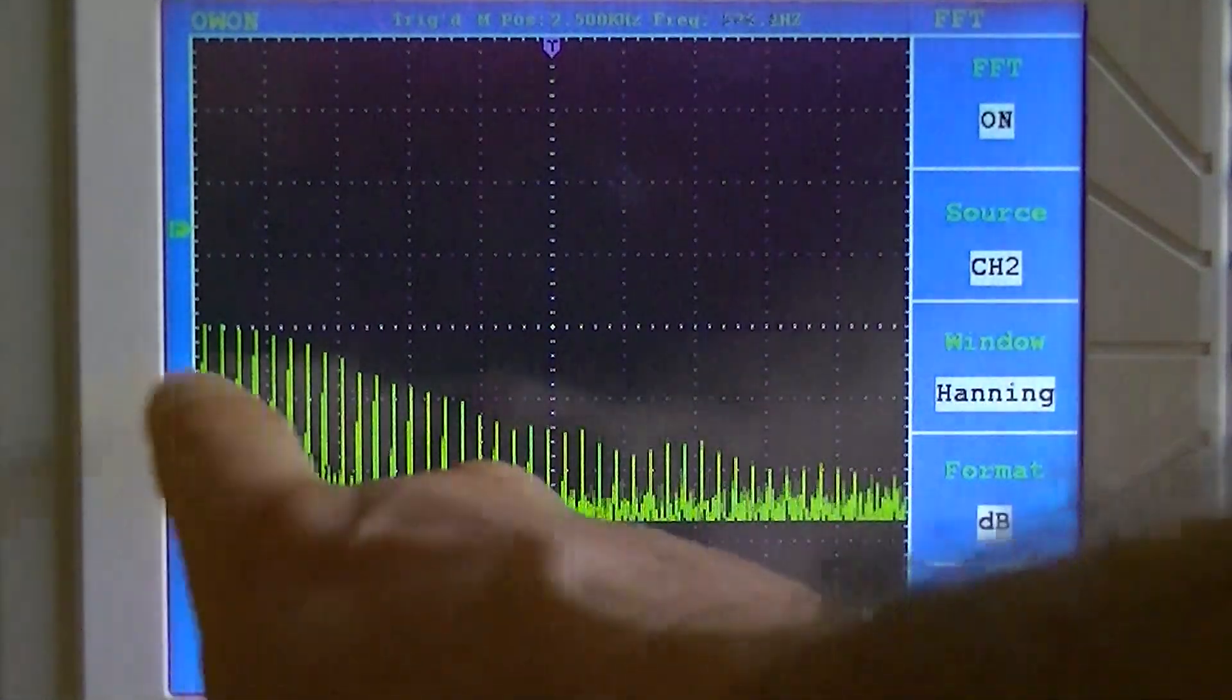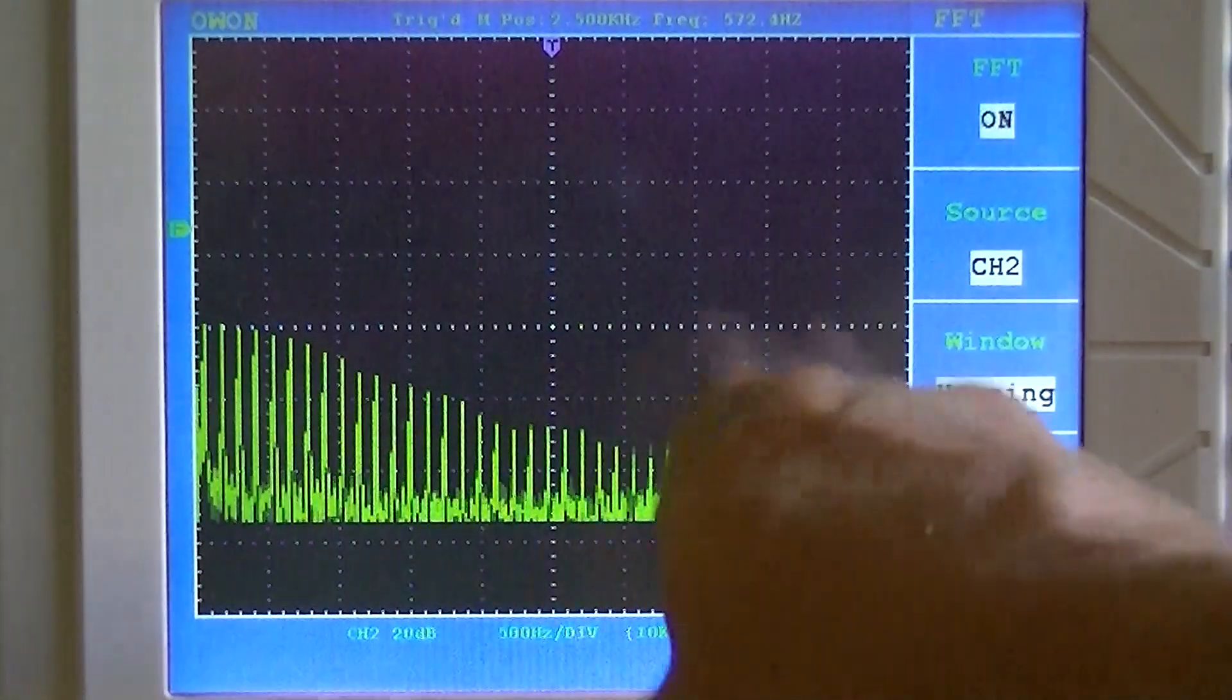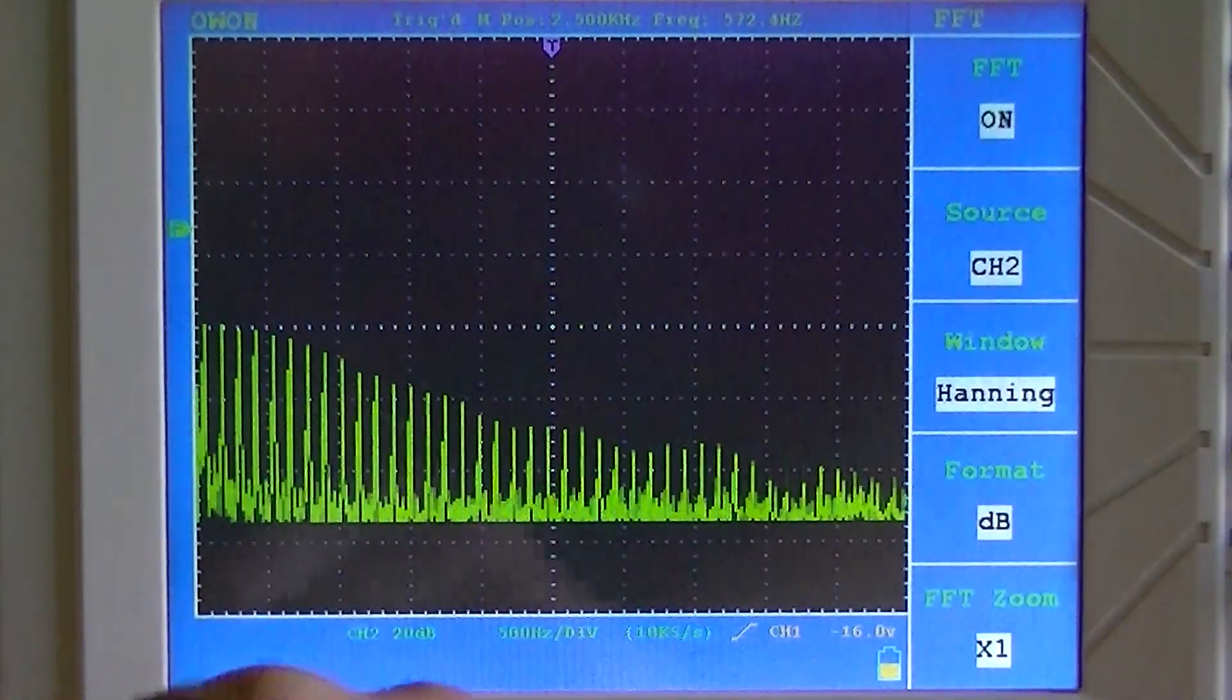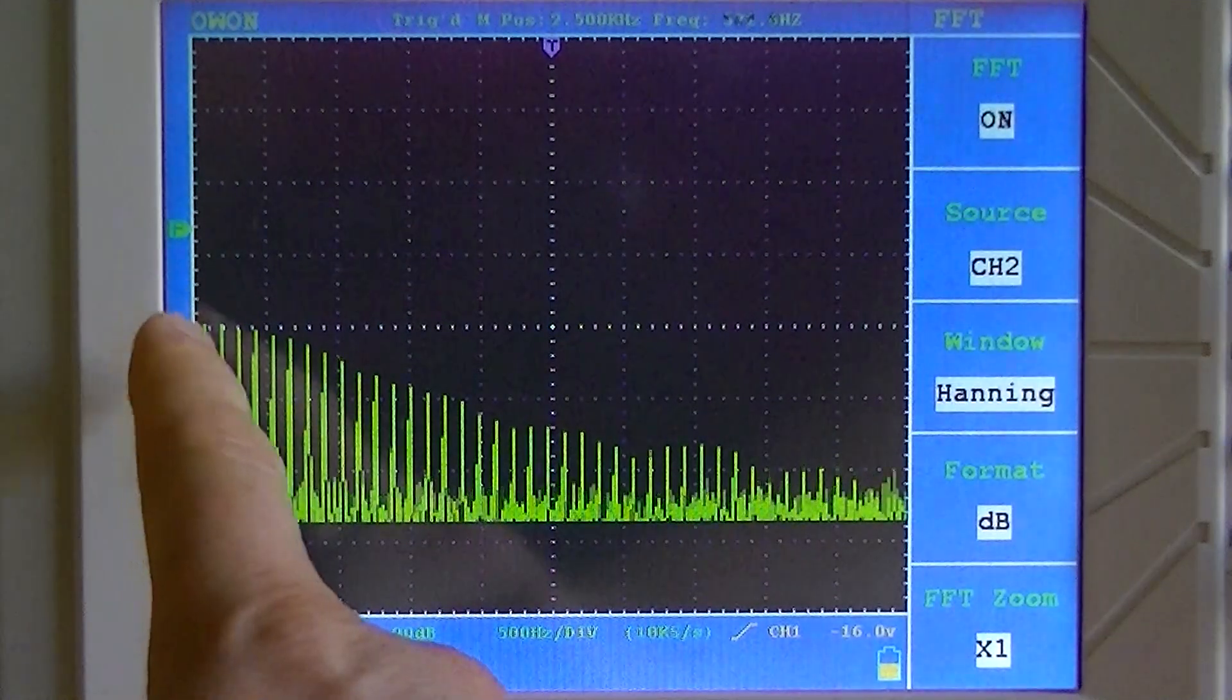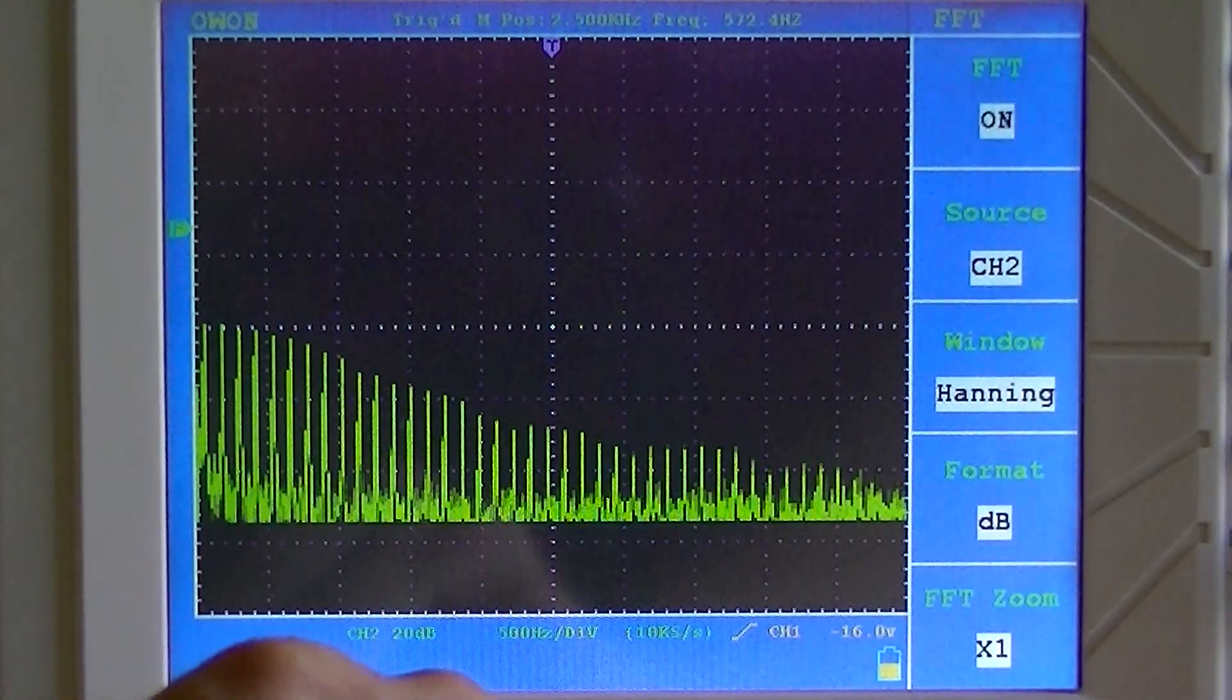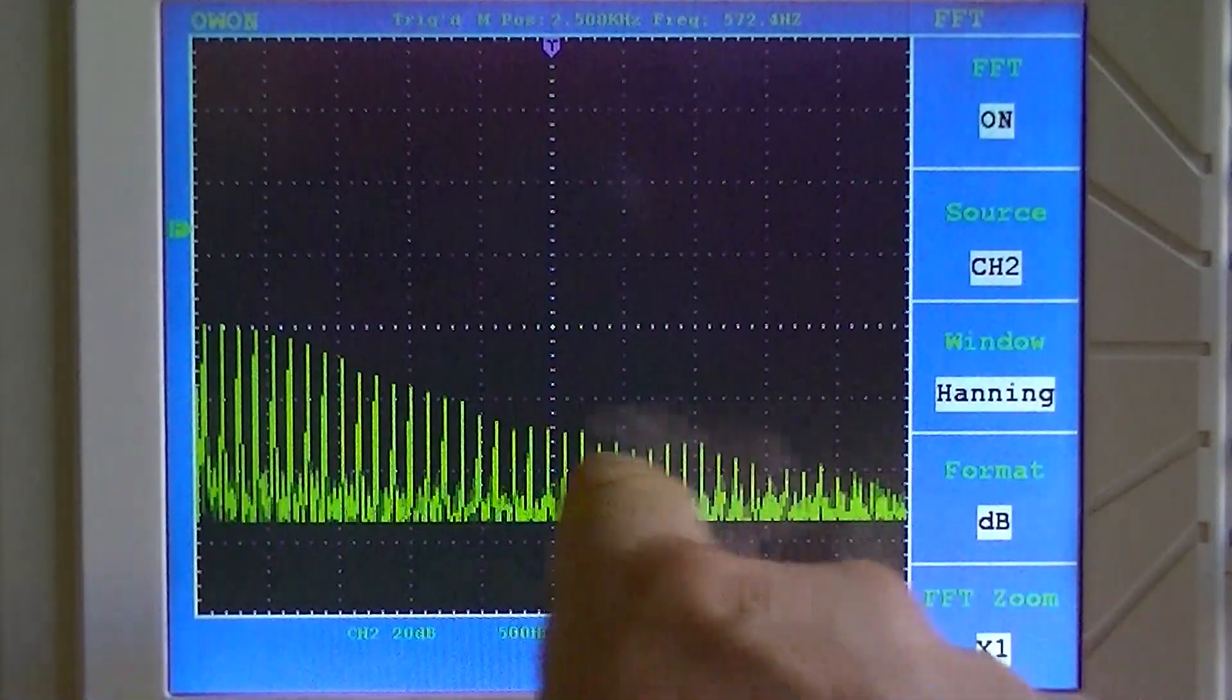And all these spikes are what are known as the harmonics. So if we were taking a pure sine wave off the system, we would only have the first spike, which would be the fundamental frequency, and all these other spikes wouldn't be present.